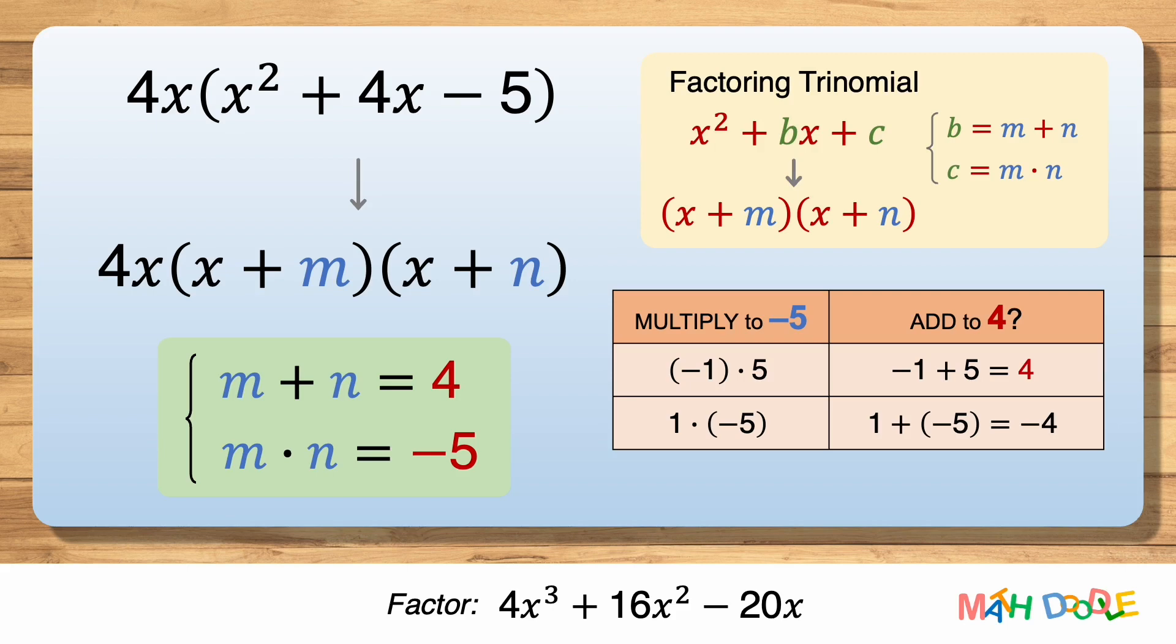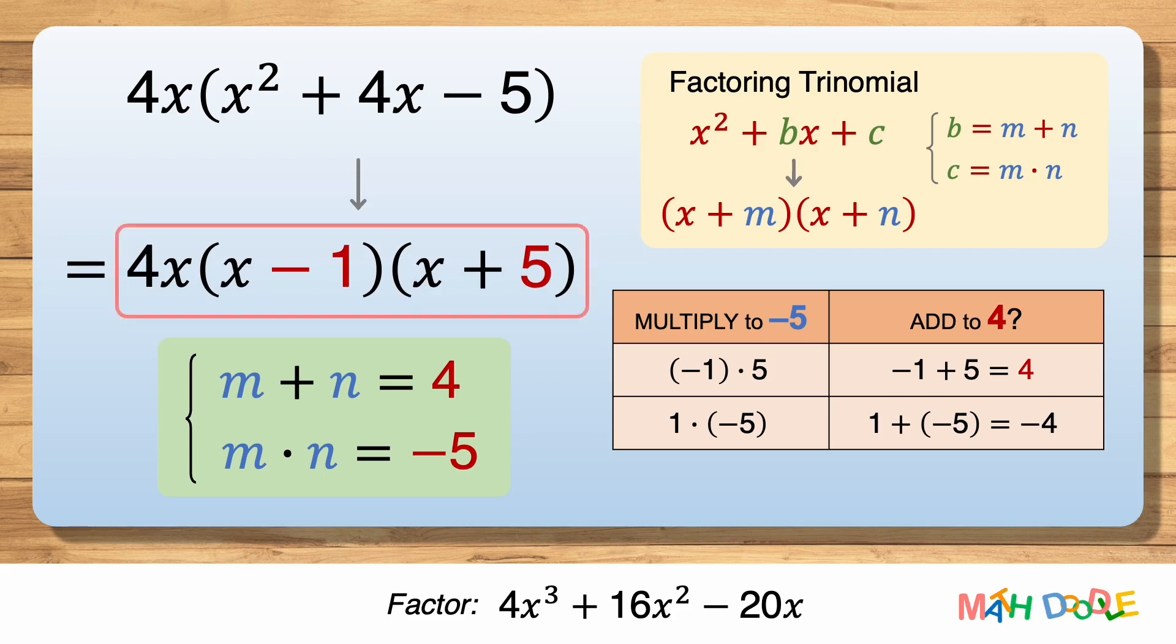This means m and n are -1 and 5, so the answer is 4x times (x - 1) times (x + 5).